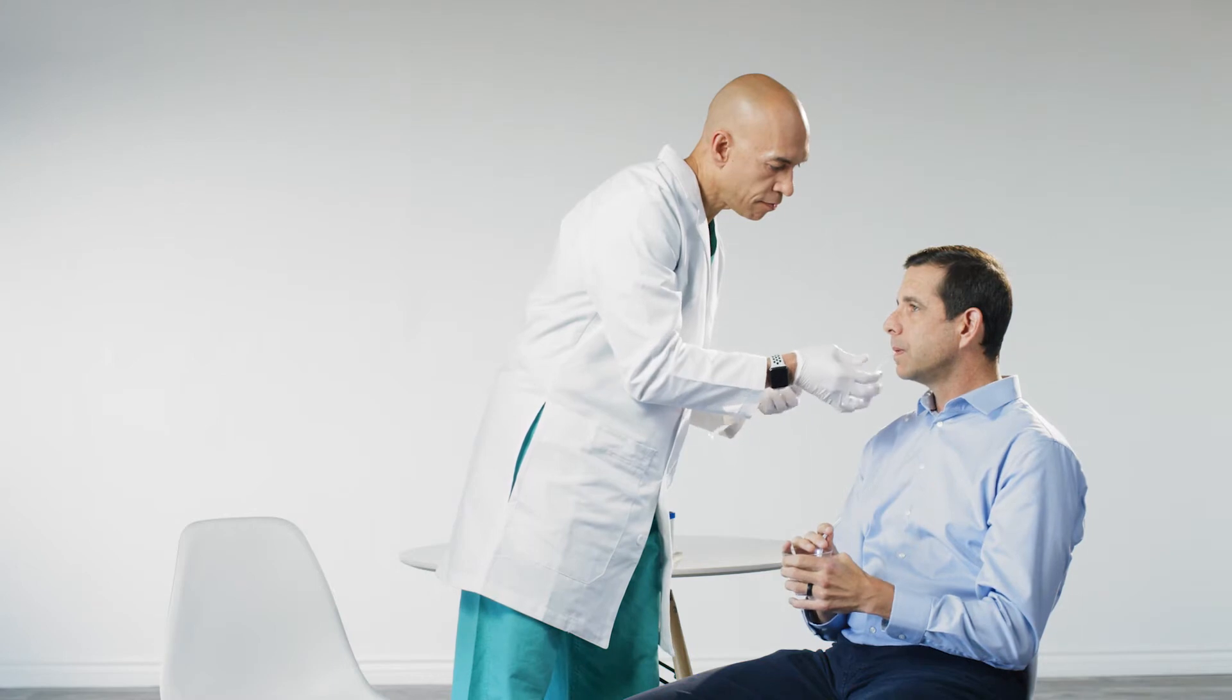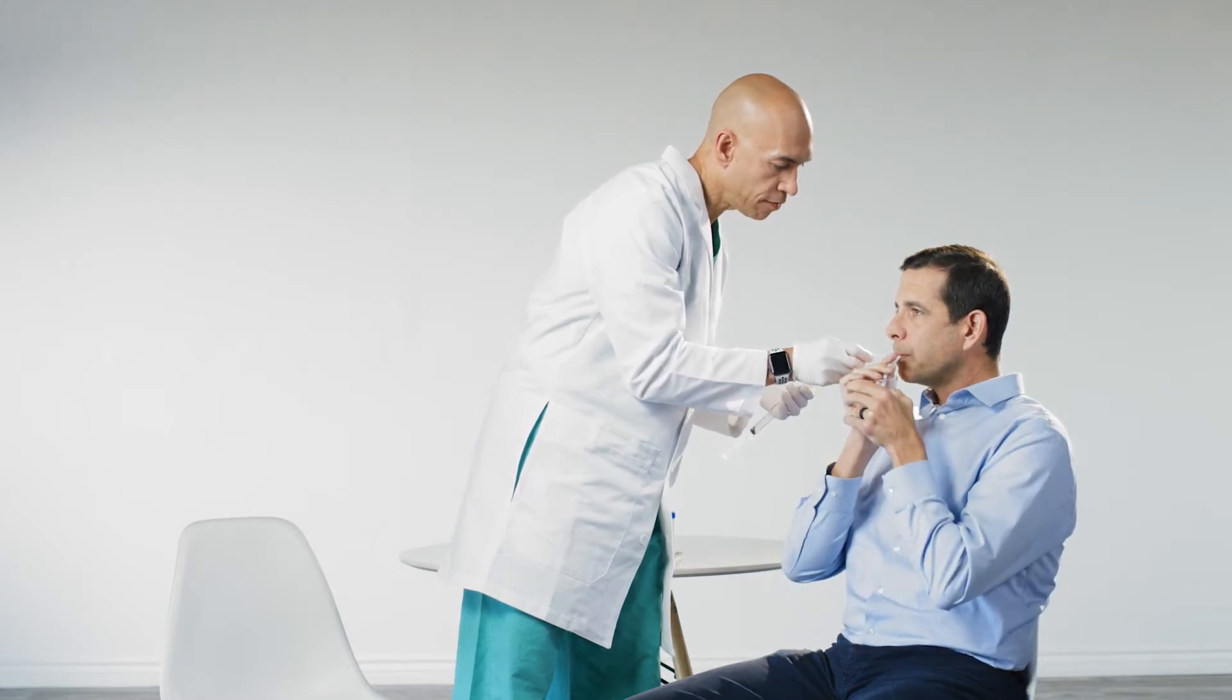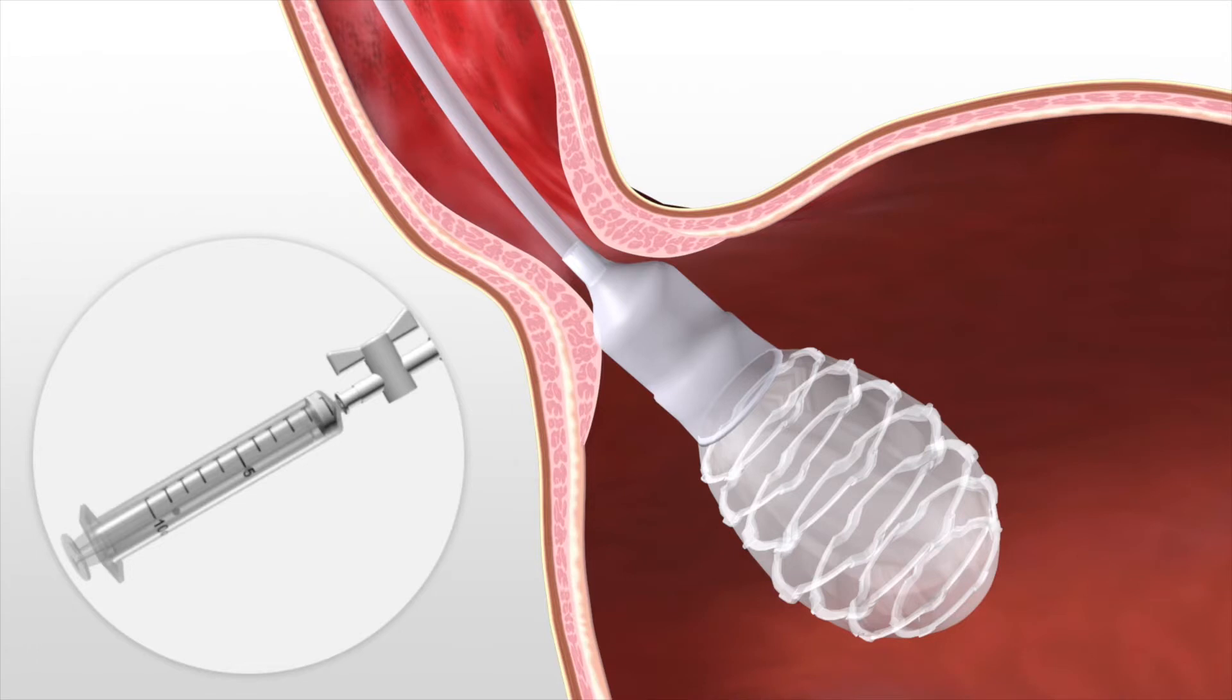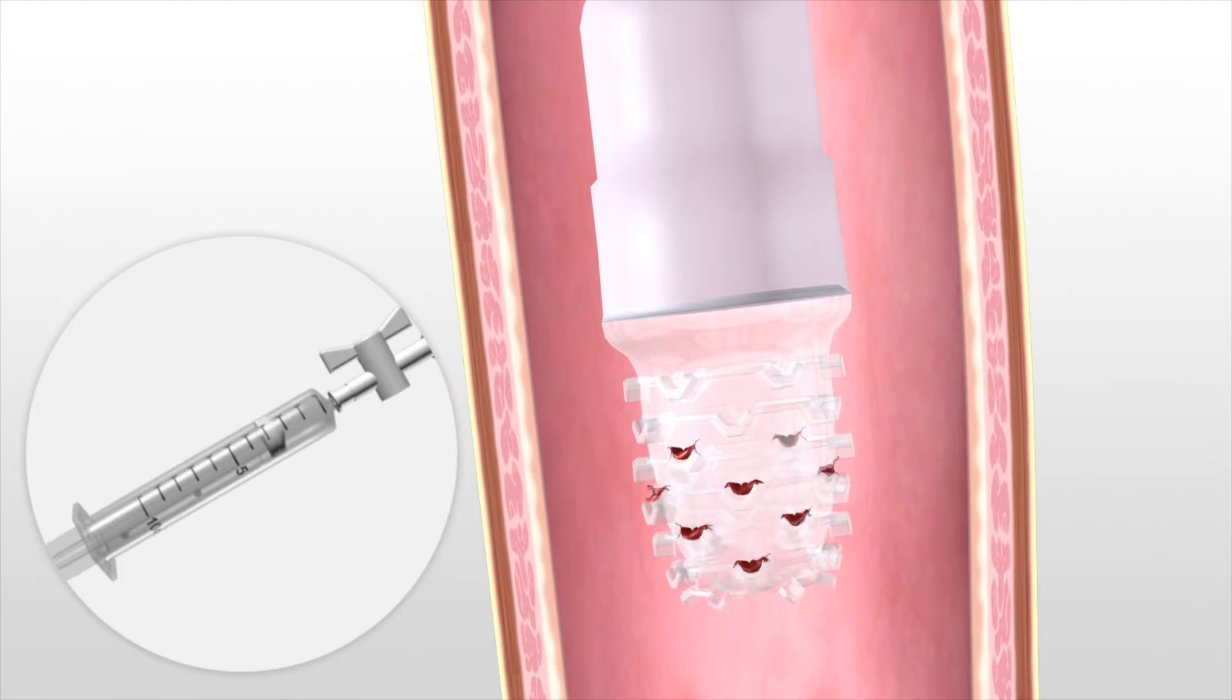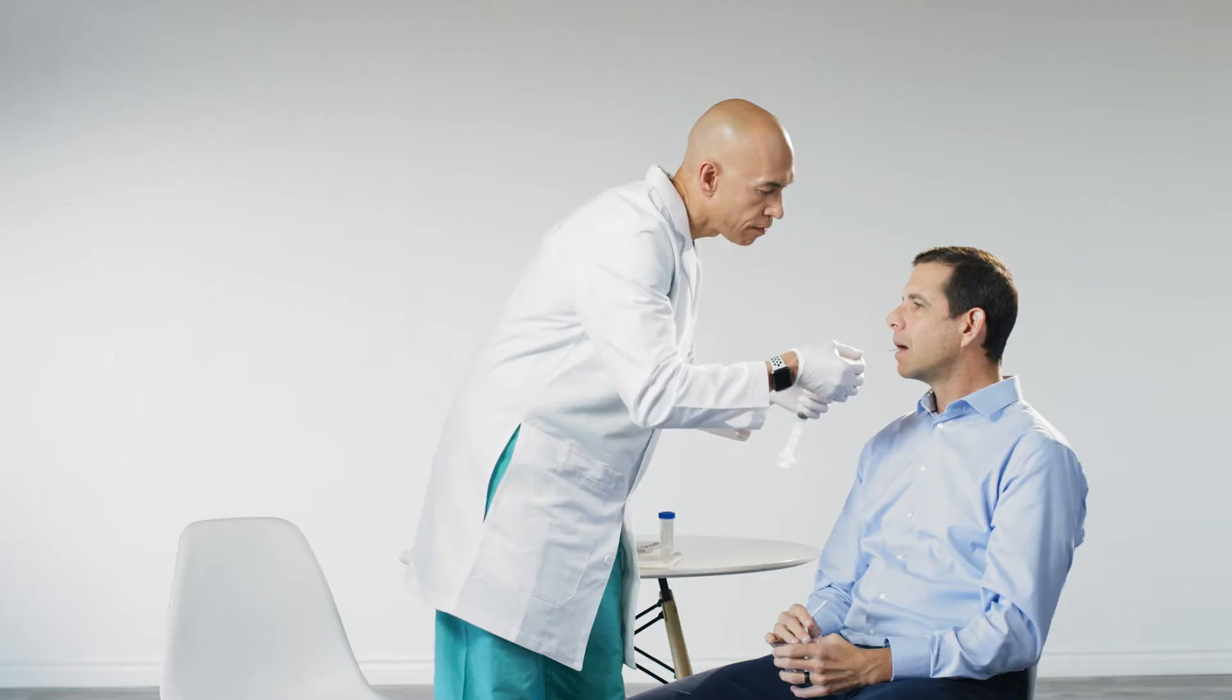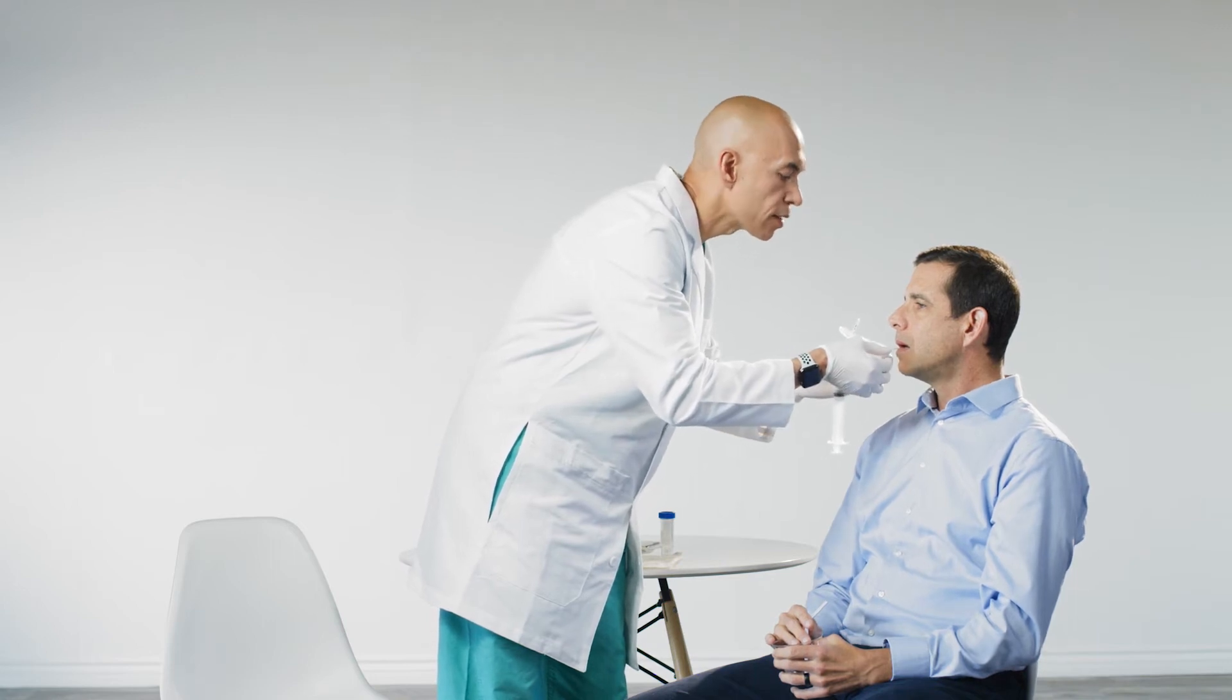Your doctor will verify a measurement on the catheter to confirm placement in your stomach. They will inflate the capsule and gently pull back the catheter to collect cells and pause briefly to deflate. This protects the sampled cells as the capsule is gently pulled back through the remaining portion of your esophagus.